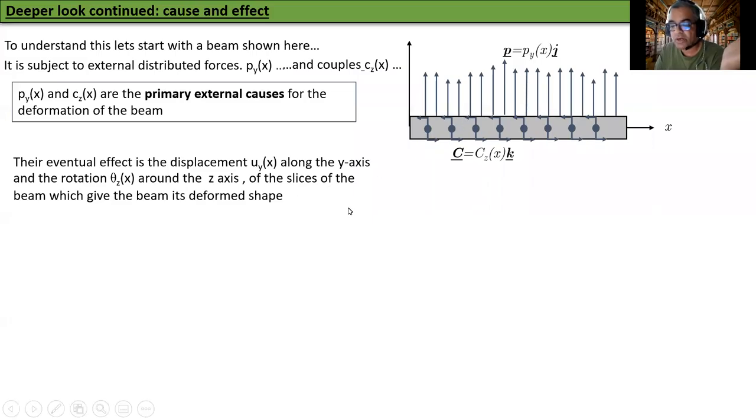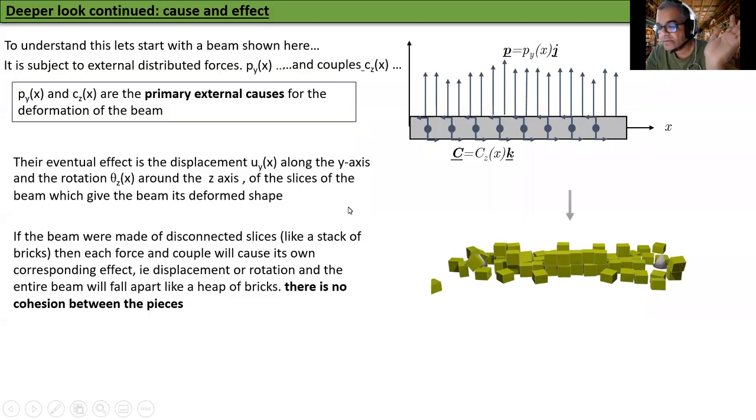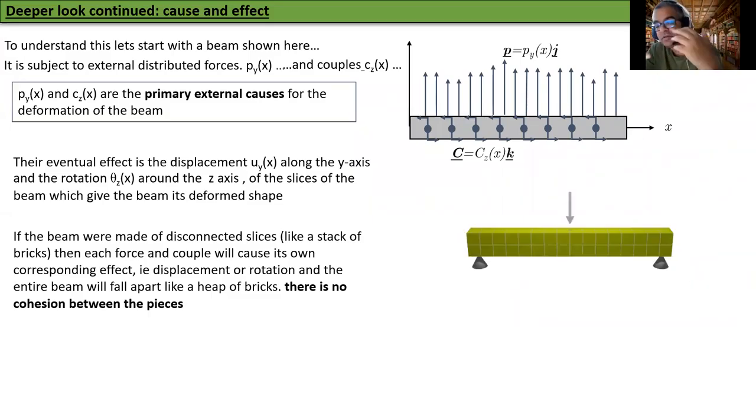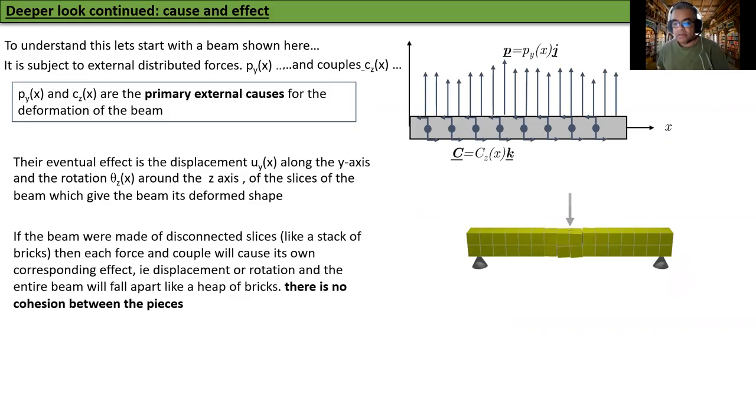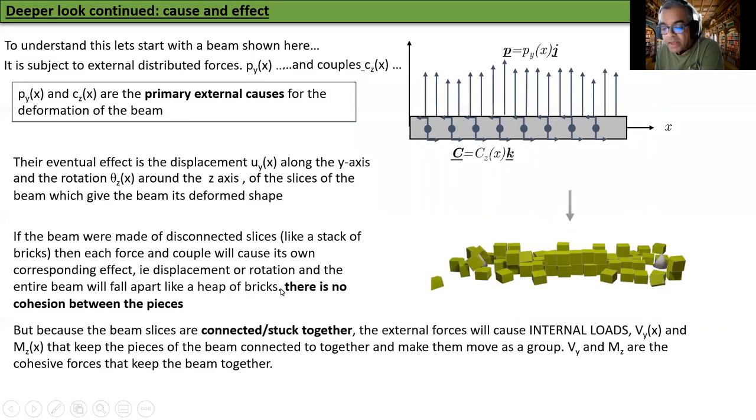To understand this coordination, if the beam were made of disconnected slices, like a stack of bricks, then each force and couple will cause its own corresponding effect. They will not be coordinated and the entire beam will fall apart like a heap of bricks. There is no cohesion between the pieces.